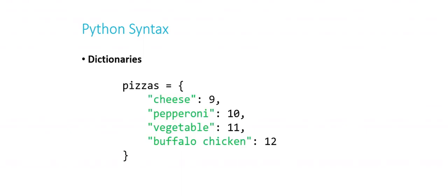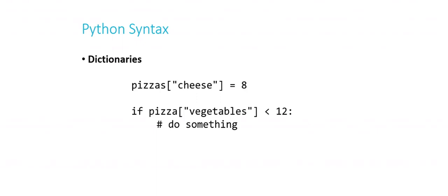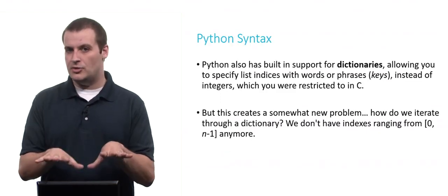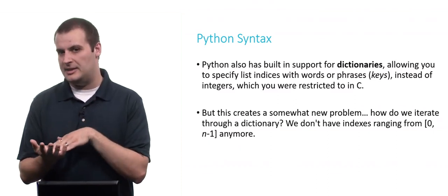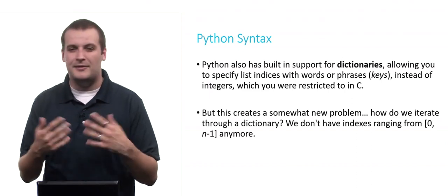You can use dictionary keys in Boolean expressions, like 'if pizzas["vegetables"] < 12'. You can also add new key-value pairs easily: 'pizzas["bacon"] = 14' — now the dictionary has five pairs. But if we don't have integer-based indexes, how do we iterate through? We can't just iterate over keys alphabetically without sorting them, which feels messy. Fortunately, Python's flexible for loop handles this.